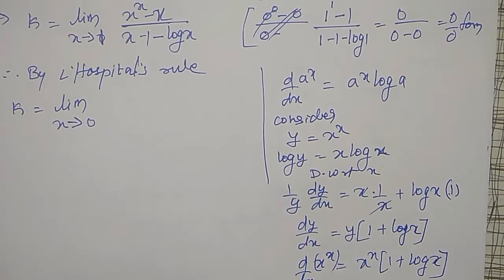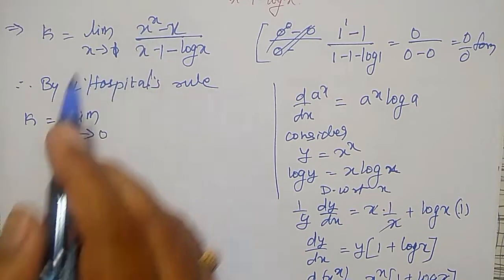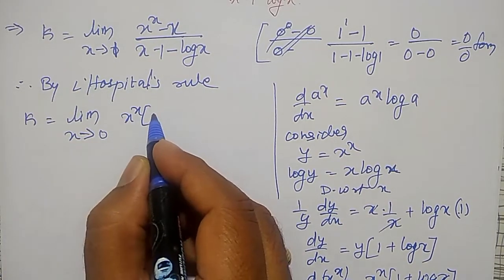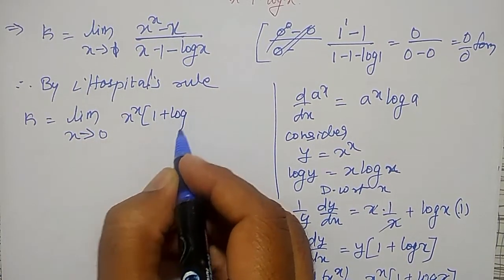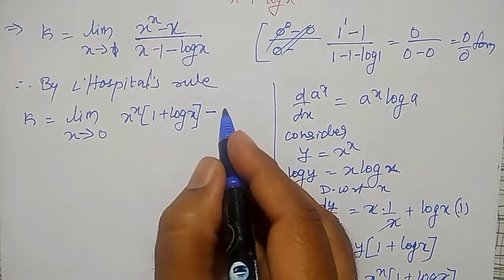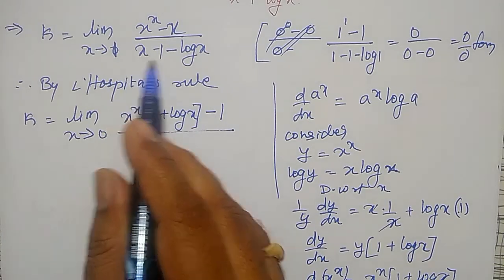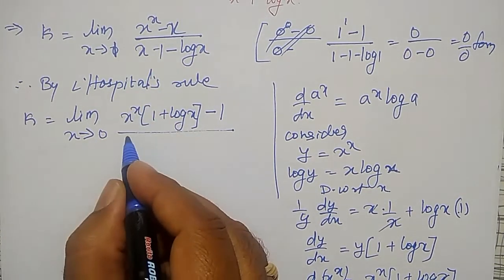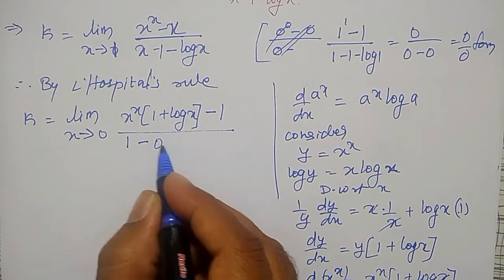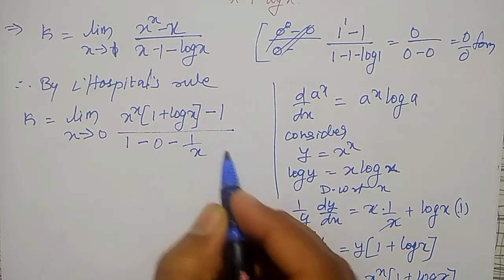For the numerator, the differential of x raised to x is x raised to x into 1 plus log x, minus differential of x which is 1. Divided by the denominator: differential of x is 1, minus differential of log x which is 1 by x.